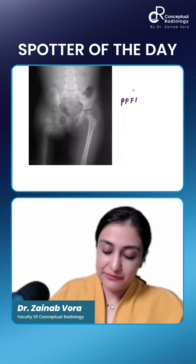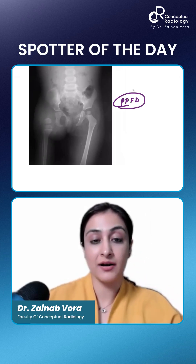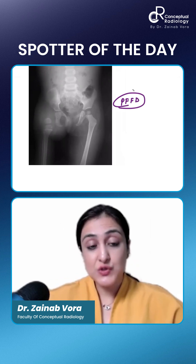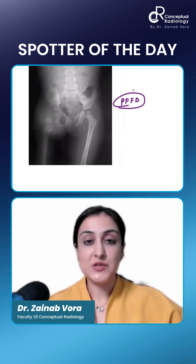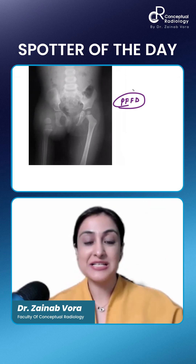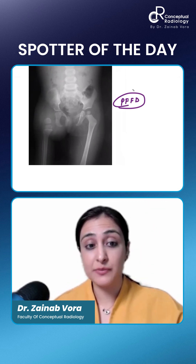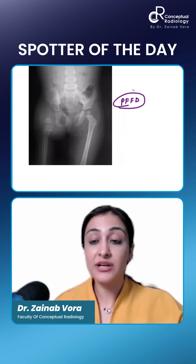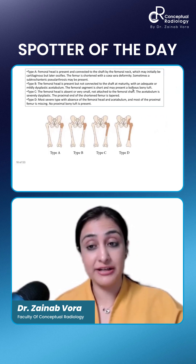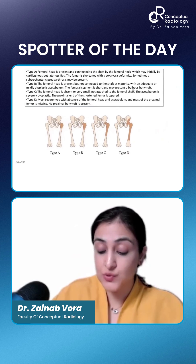This is proximal focal femoral deficiency (PFFD), the mildest type. This is not DDH — in DDH the femoral head is displaced upward because the acetabulum is shallow. Here the acetabulum is not well developed, so this is proximal focal femoral deficiency. Let me explain the classification we use.